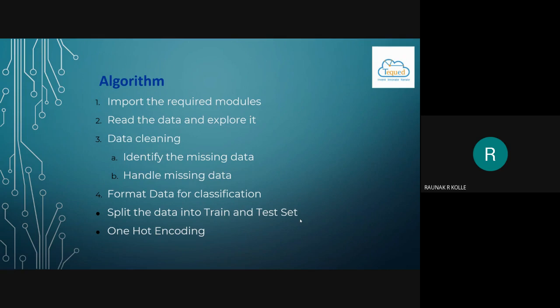The algorithm used will have four parts: inputting the required modules, reading the data and exploring it, cleaning the data which will involve two parts - identifying the missing data and handling the missing data, and finally formatting the data for classification, which will involve splitting of the data into train and test sets and one hot encoding.